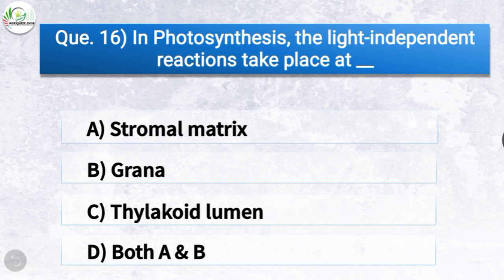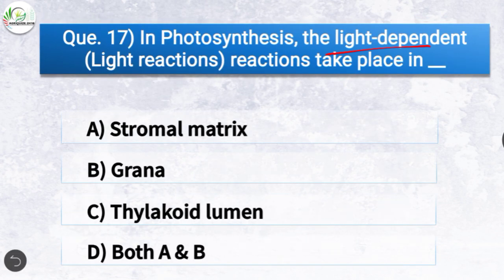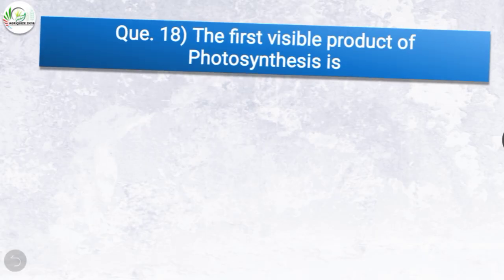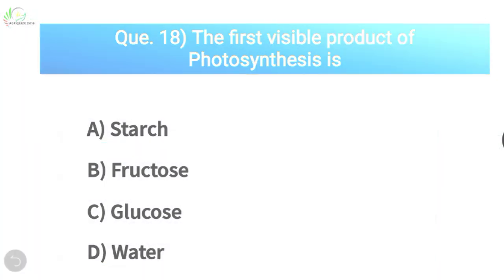Question 16: In photosynthesis, the light-independent reactions take place at the stromal matrix. Question 17: In photosynthesis, the light-dependent reactions take place in the grana. Question 18: The first visible product of photosynthesis is what? Options: starch, fructose, glucose, or water. The correct answer is option A — starch. The first visible product of photosynthesis is starch.